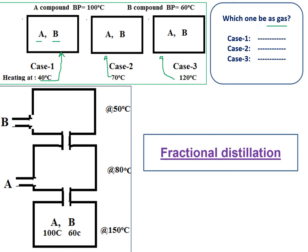In case one, we gave only 40 degrees centigrade. A needs at least 100 degrees to become a gas, and B needs at least 60 degrees. Since 40 is less than both boiling points, both A and B remain as liquids — no one behaves as a gas. In case two, we gave 70 degrees centigrade. B's boiling point is 60 degrees, so 70 is enough — B converts to gas. But A's boiling point is 100, so A still remains as a liquid. So B is the gas in case two.